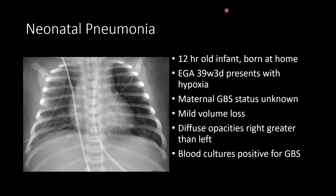While it can be hard to distinguish from respiratory distress syndrome, asymmetric or focal opacities or large pleural effusions should raise your suspicion for pneumonia. Clinical risk factors like prolonged rupture of membranes or maternal status are important. Here we have a patient 12 hours old, born at home, estimated gestational age near term, who was hypoxic upon arrival and was intubated. The maternal group B strep status was unknown. The opacities were somewhat asymmetric — diffuse on the right and more affecting the left lower lobe. Blood cultures came back positive for group B strep, making this a classic case of neonatal pneumonia presenting as respiratory distress in a term infant.